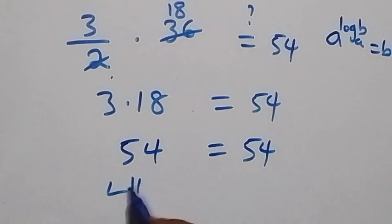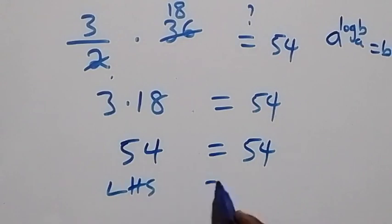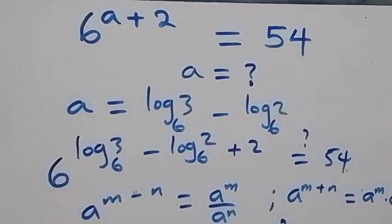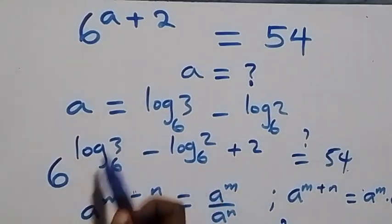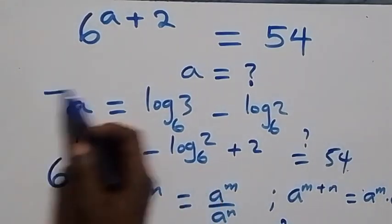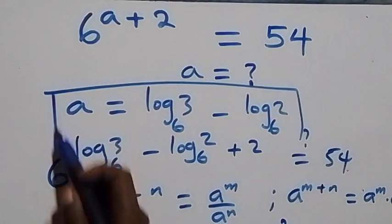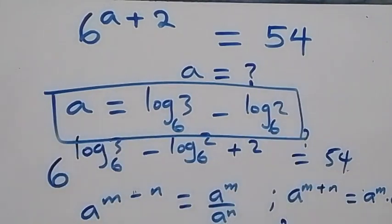Left-hand side now equals the right-hand side. We conclude that a equals log 3 to base 6 minus log 2 to base 6, satisfies the given problem.